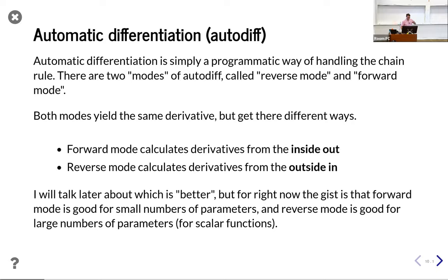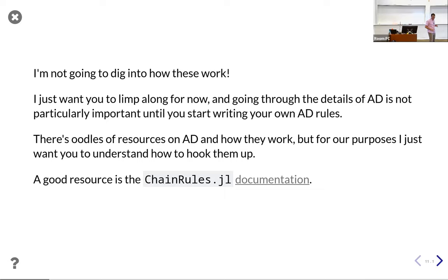Forward mode is really good for small numbers of parameters. Reverse mode is great for large numbers of parameters, particularly if you have a scalar output function. So: lots of parameters, scalar output — that's the one thing you want to remember. I'm not going to dig into reverse diff deeply here. If you're very interested in how AD works at a core level — which you'll need if you start writing your own AD rules — I recommend going to the ChainRules documentation, which walks through all the math.